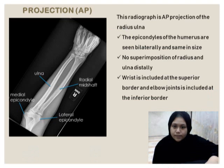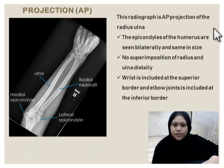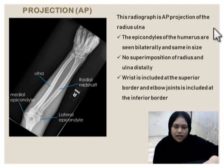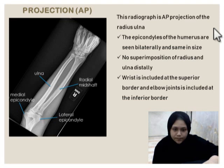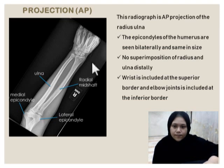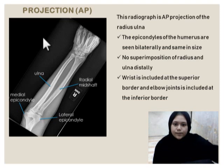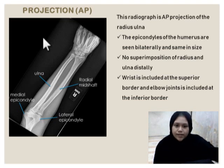For projection of AP, this radiograph is AP projection of Radius Ulna. I see so because the condyles of humerus are symmetrically equal in size. No superimposition of Radius and Ulna distally, which is here. And wrist is included at the superior border, and elbow joint is included at the inferior border.